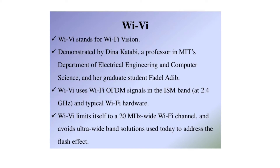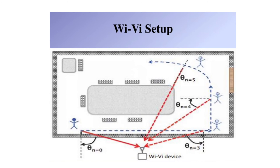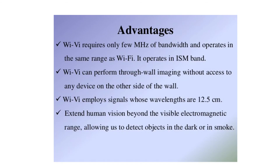As a demonstration, the Wi-Vi setup is placed beside a wall to identify how many people are inside a room. The advantages of Wi-Vi include requiring only a few megahertz of bandwidth and operating in the same ISM band range as Wi-Fi.